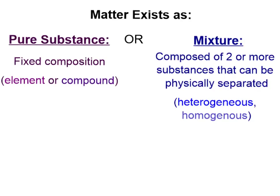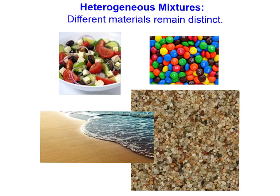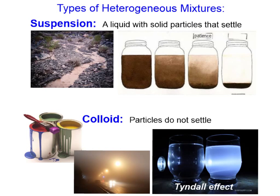There are two different kinds of mixtures: heterogeneous and homogeneous. In a heterogeneous mixture, the different materials remain distinct. For example, this bowl of M&Ms has very distinct different materials — different colors: red, blue, green, and yellow. In this salad, the different materials are very distinct; the components are touching each other but are definitely not interacting chemically and can be physically separated. The sand on a beach is also a heterogeneous mixture.